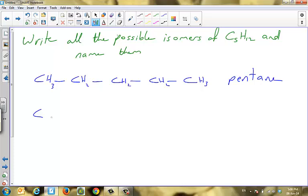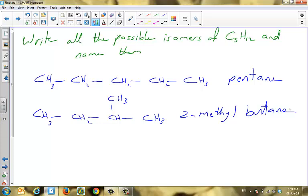So we have four carbon atoms. Let us check if we can have three carbon atoms and we put one carbon from this side and one carbon from this side.